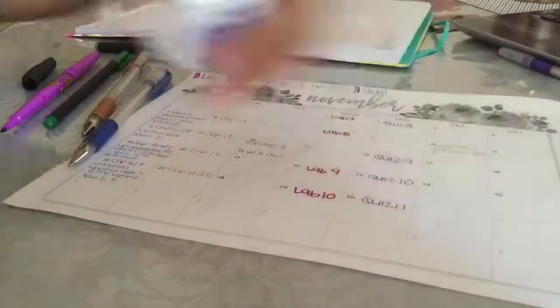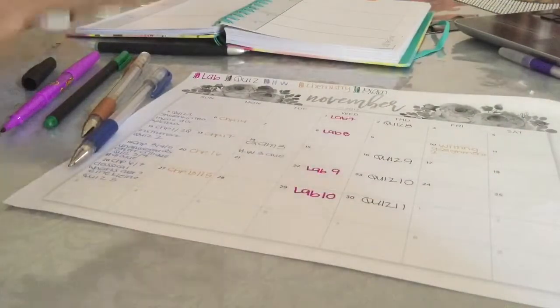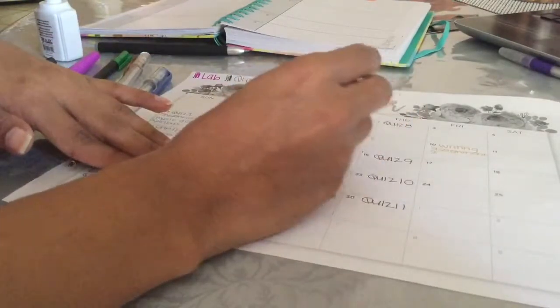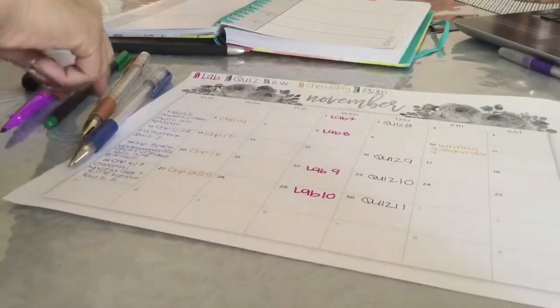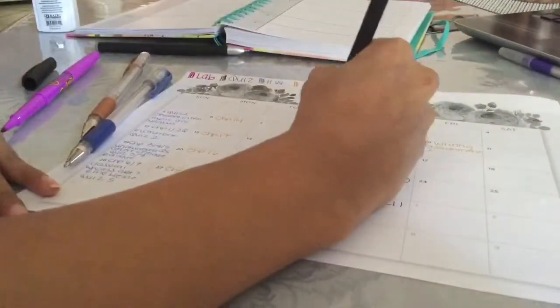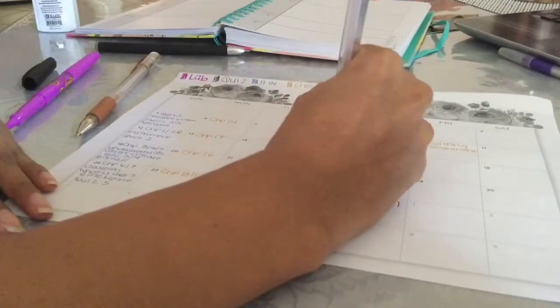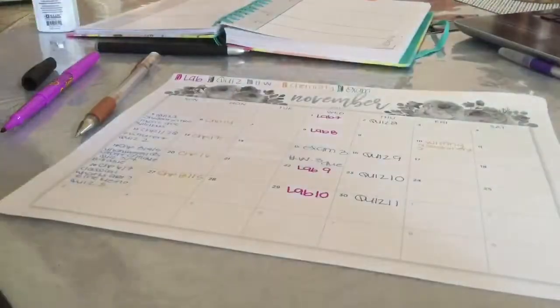And here I am going with whiteout just because I did make a mistake. I put my exam three on the 14th, which is on a Tuesday when I don't have class on Tuesday, and I moved it to Wednesday the 15th when I really do have my exam on that day.